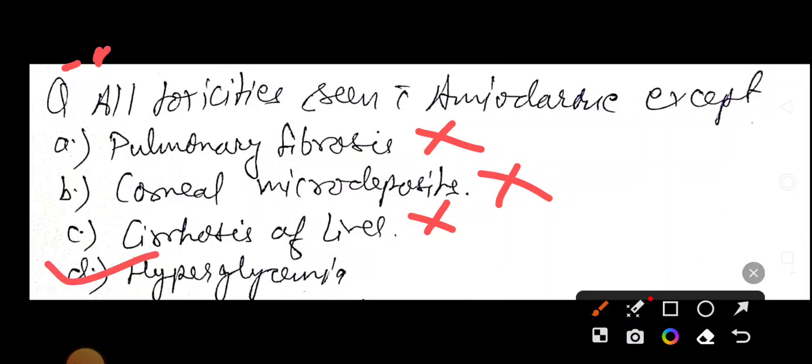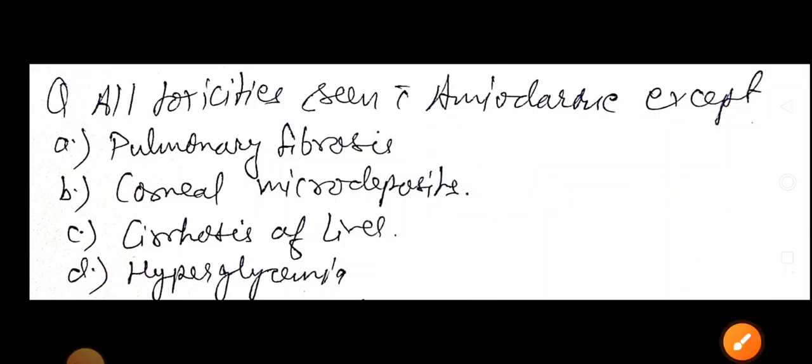So answer is D. They are asking except. So except is hyperglycemia. Which drug causes hyperglycemia? Diuretics and beta-blockers. So guys, hope it's clear.